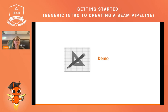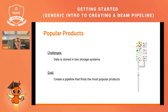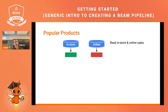To close off the presentation, I want to show you a demo. We are a fashion company, and we want to know what our most popular products are that are currently being sold. The challenge is that the data currently lives in two storage systems, the data can be small or big, and our goal is to create a data processing pipeline that finds the most popular products.